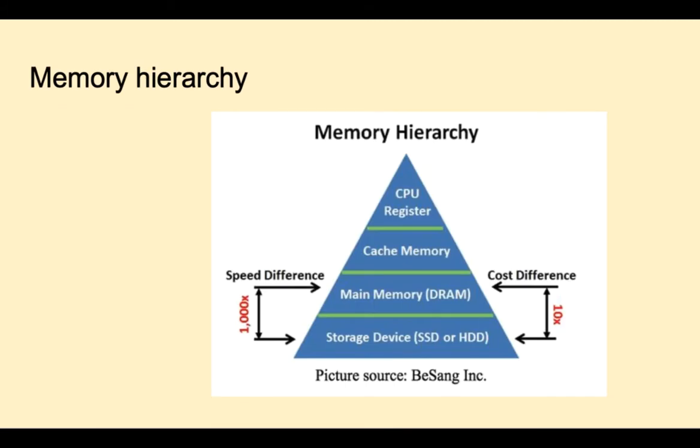There are four major types of memory used today. The first is DRAM for main memory RAM. SRAM is used for cache. Cache memory is inside the CPU. Flash memory is used for solid state drives and magnetic disks for large storage drives.